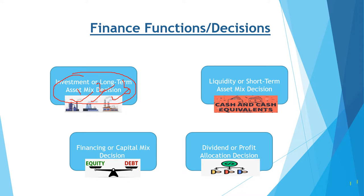The second is the financing or capital mix decision, where a finance manager decides how much money to raise from outside the organization and how much to raise from inside — from shareholders. The third is the dividend decision: when profit remains, the finance manager can reinvest it in the organization, give it as profit to shareholders, or partly invest and partly distribute it to shareholders.